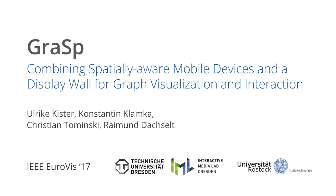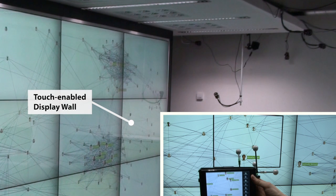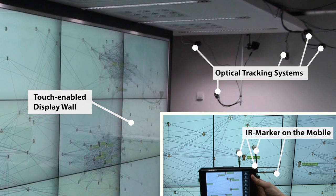Combining spatially aware mobile devices and a display wall for graph visualization and interaction. Our setup consisted of a touch-enabled display wall and tablets with attached IR markers which are spatially tracked.